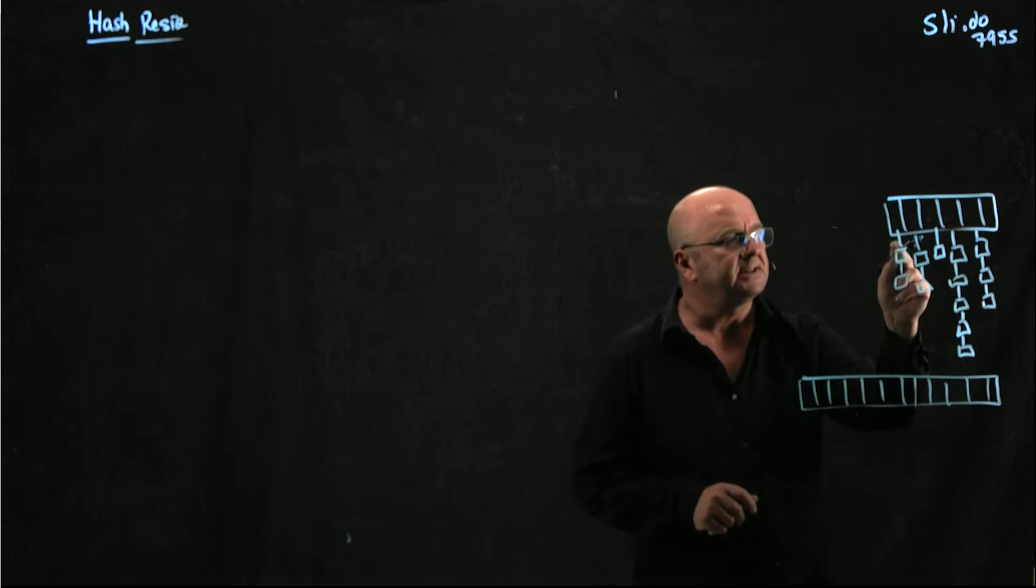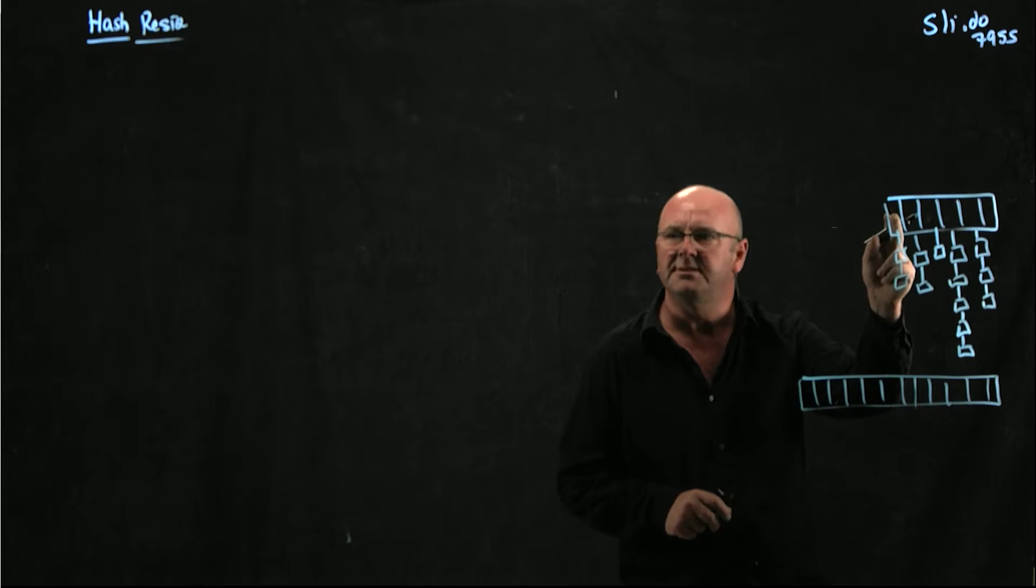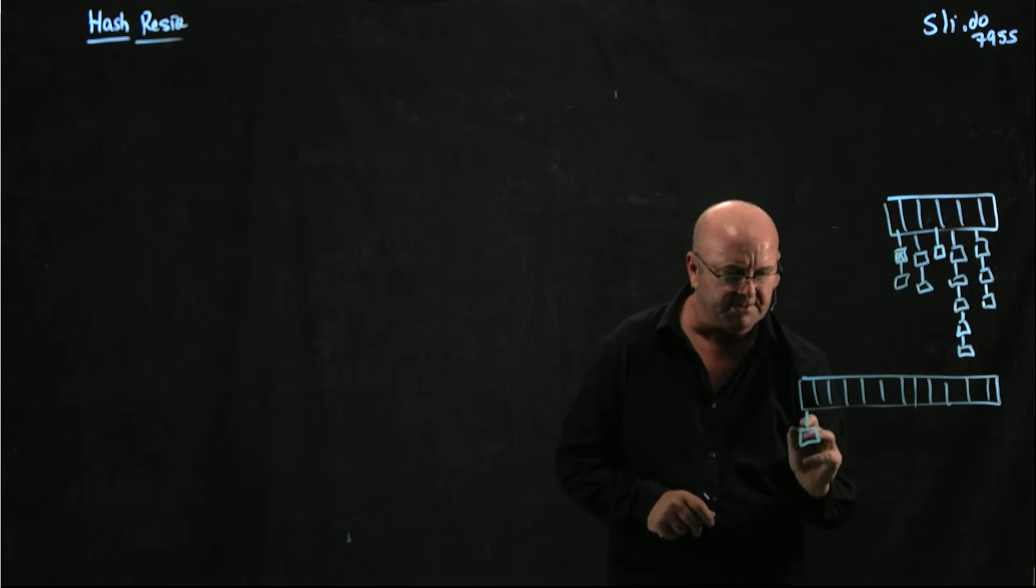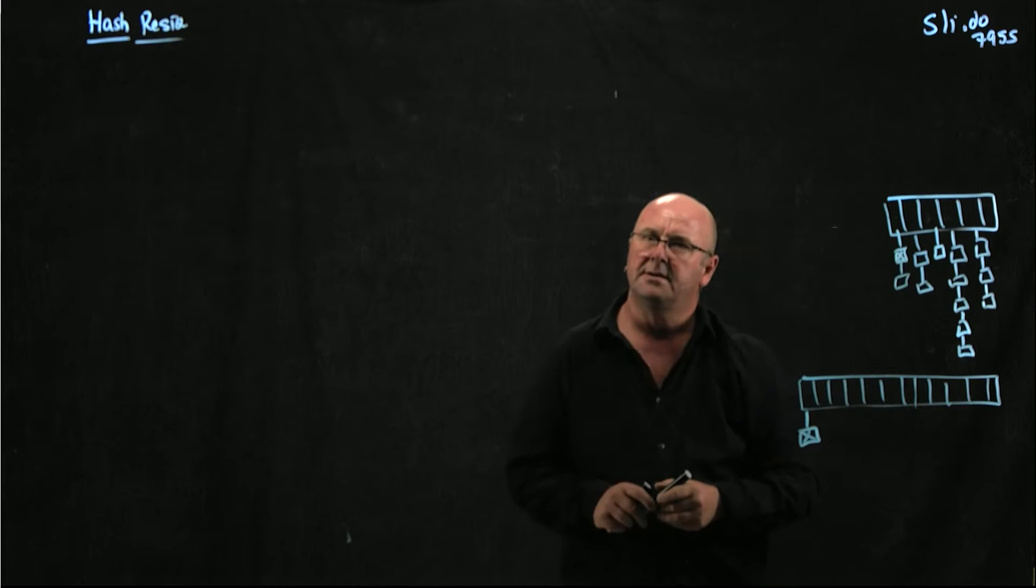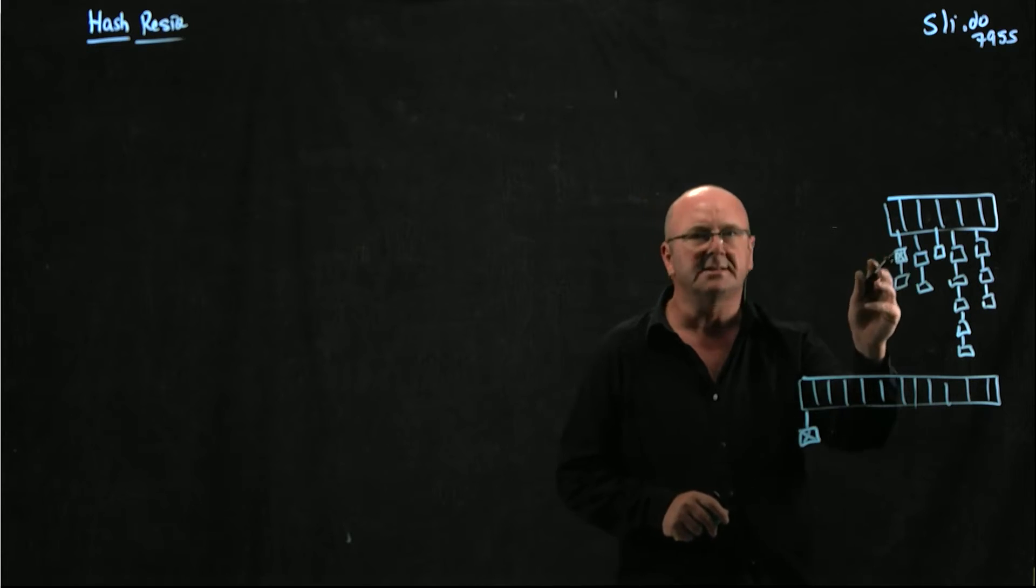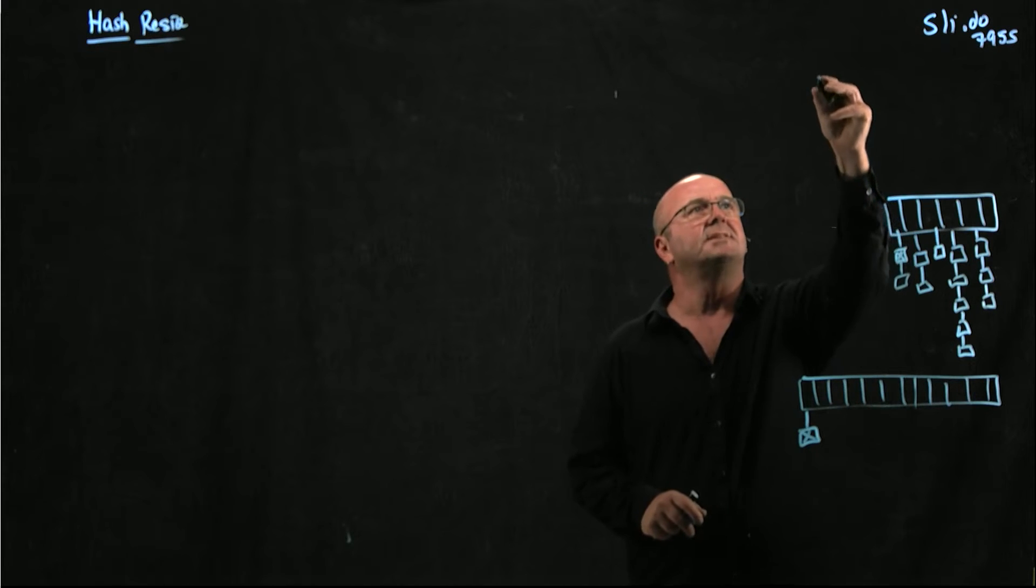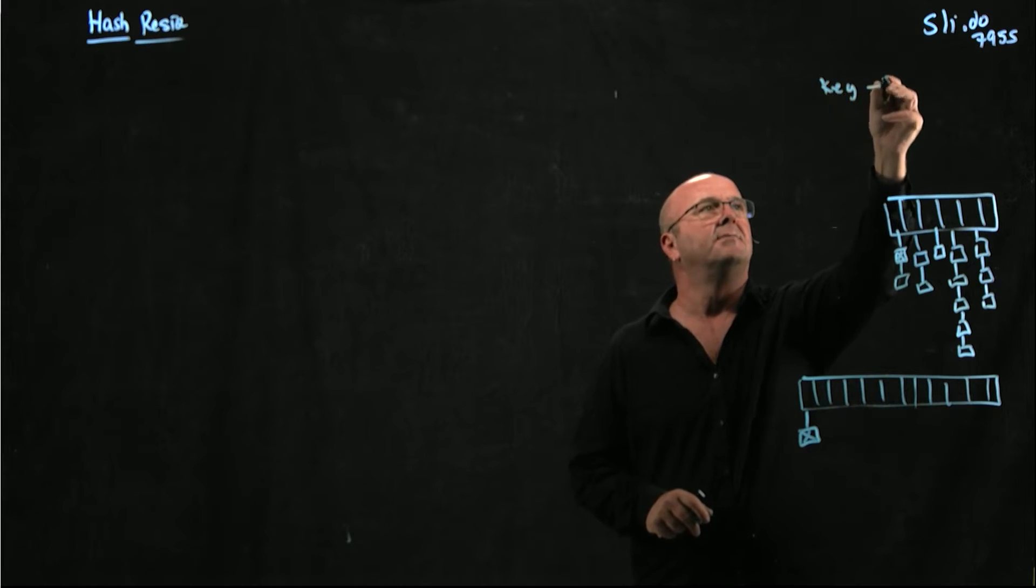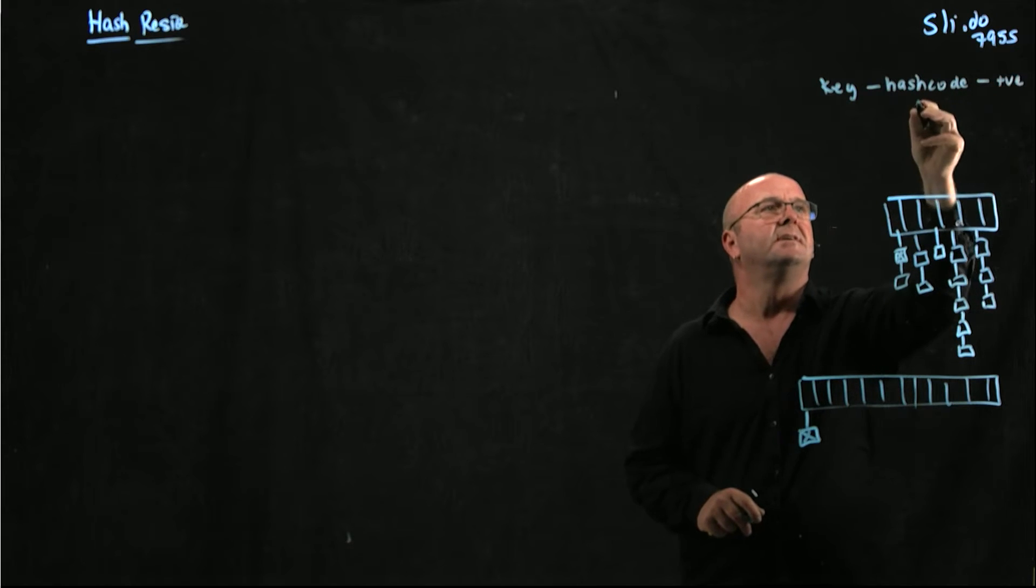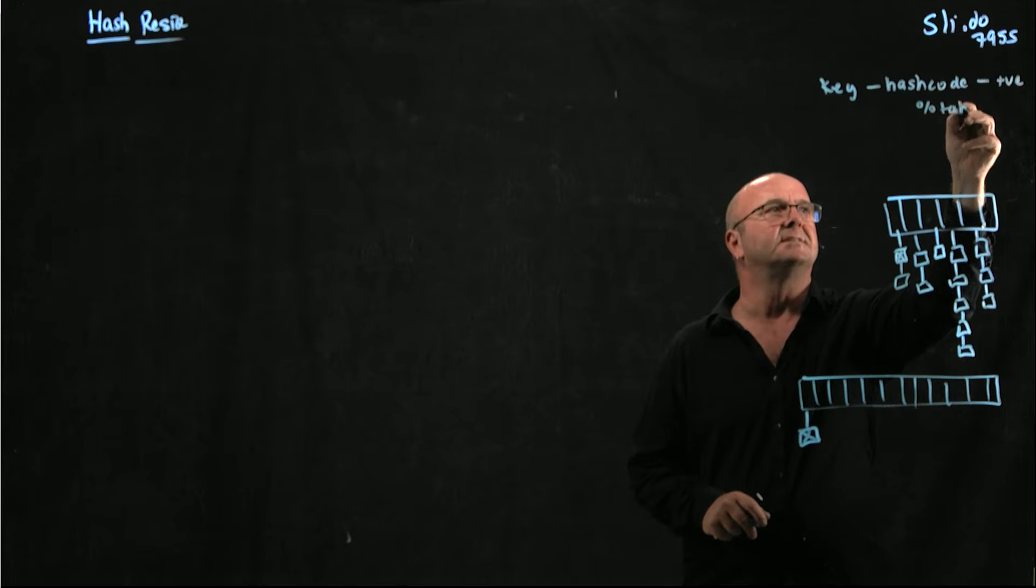But we can't just take the first element in position zero in this array and move this element to position zero in the new array. Why not? Because the reason that this thing is here is that we start with the key, we get the hash code, we make it positive, and then we mod it on the table size.